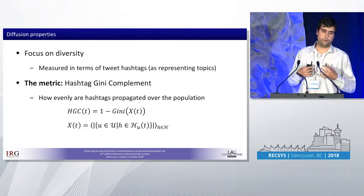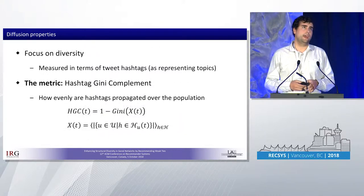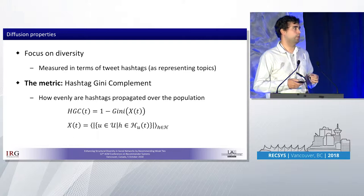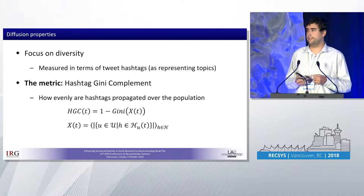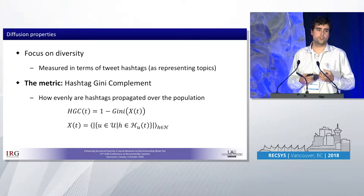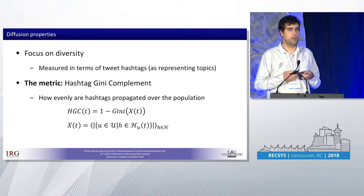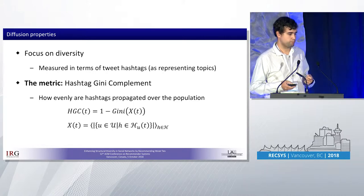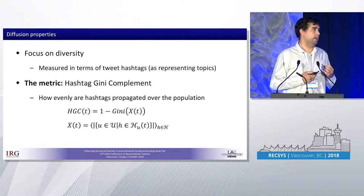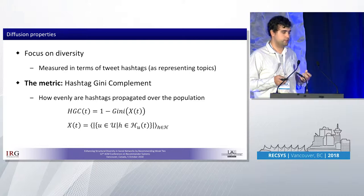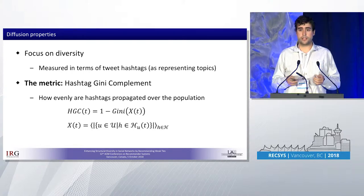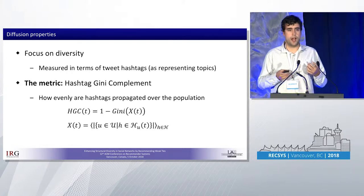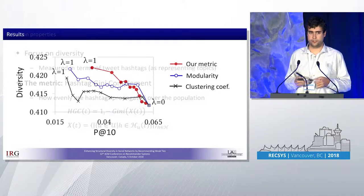How could we measure information diversity? As we use Twitter data, we found a natural way to do it by measuring it in terms of hashtags, which can represent the topic of the tweets. We created a metric, shown on the screen, which measures how heavily hashtags are propagated over the population.